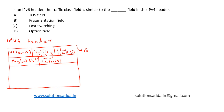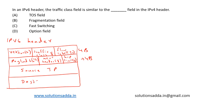Then we have hop limit, which is also 8 bits, so this row is also 4 bytes. Next we have source IP and destination IP, both of which are 128 bits each.